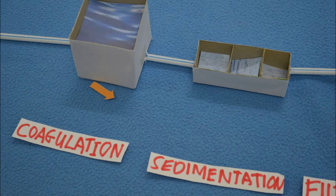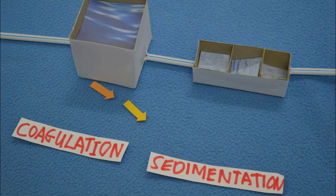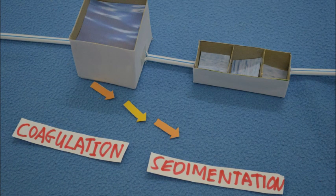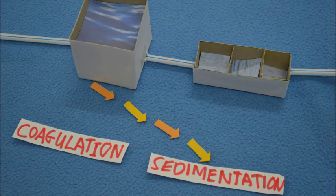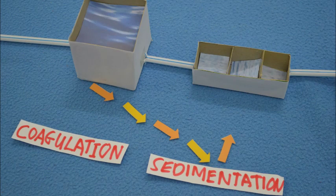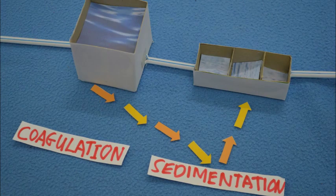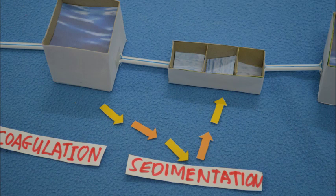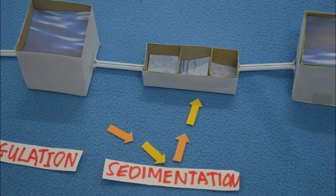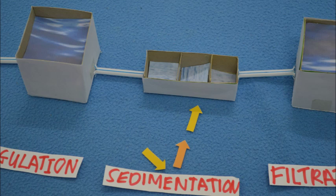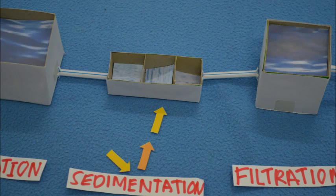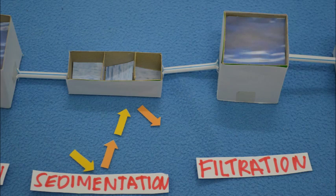The third stage is sedimentation of floc in the sedimentation tank. The weight of the floc together with gravity assists in the settling at the bottom of the sedimentation tank. The solid particles are removed out of the water and clear water can be observed.